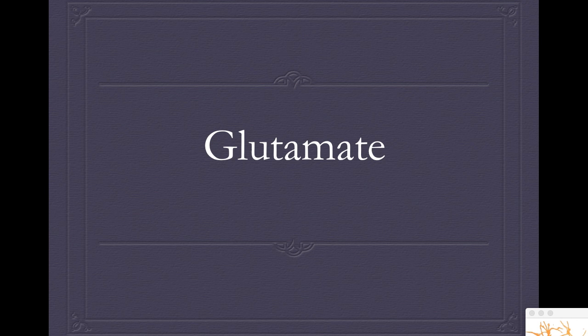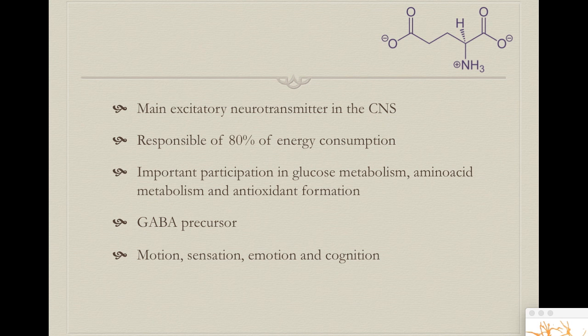Let's begin with maybe one of the most important neurotransmitters in the brain: glutamate. Glutamate is the main excitatory neurotransmitter in the central nervous system. This is very relevant because it means it is directly responsible for up to 80% of energy consumption in the brain. Half of all the synapses in the brain are glutamatergic, so half of everything the brain does is done by this neurotransmitter.